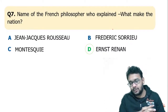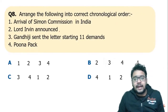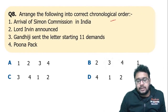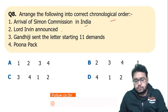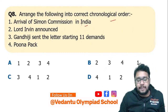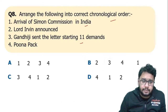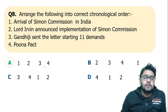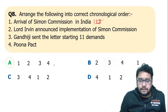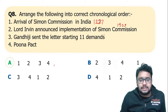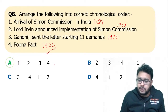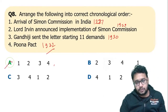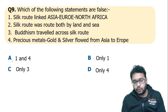Arrange the following in correct chronological order — from the Nationalism in India chapter: arrival of Simon Commission in India, Lord Irwin announcing the implementation of the Simon Commission, Gandhiji sending the letter stating 11 demands, and the Poona Pact. Simon Commission arrived in 1927, implemented in 1929, Gandhiji's letter in 1930, Poona Pact in 1932. So the answer is one, two, three, four — option A.